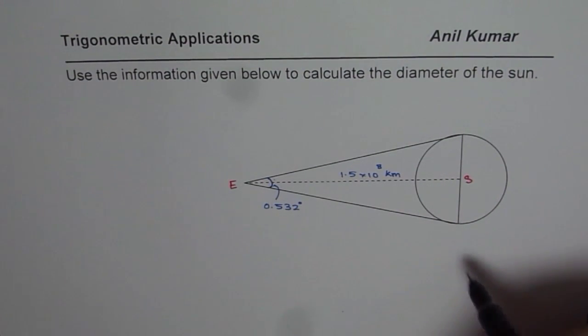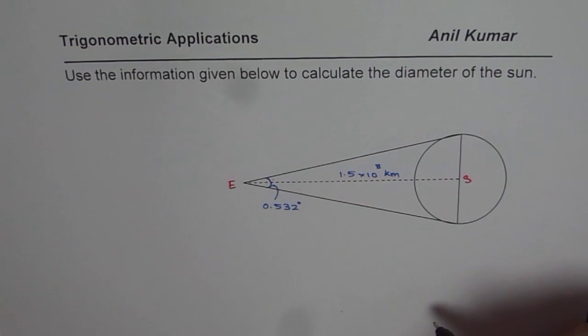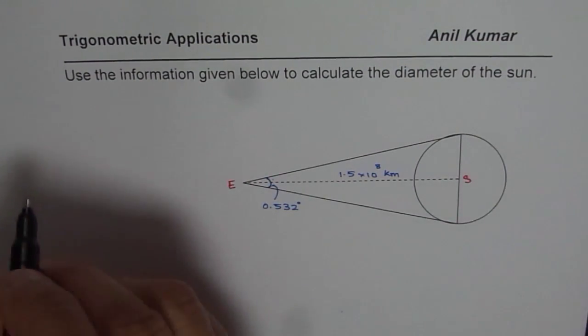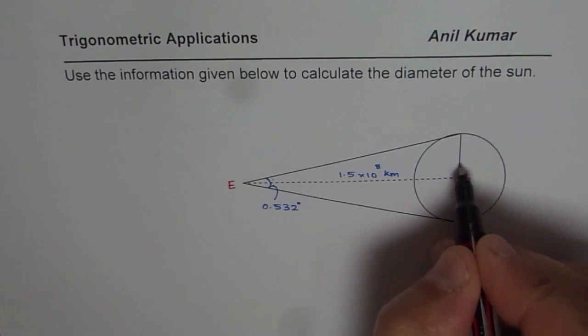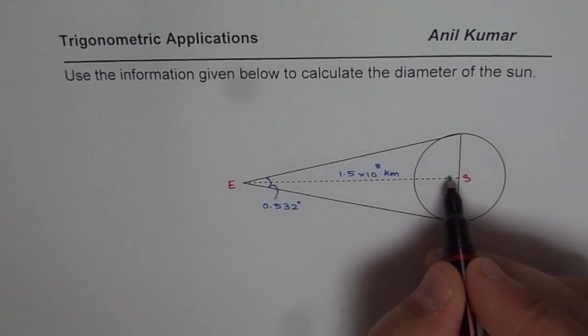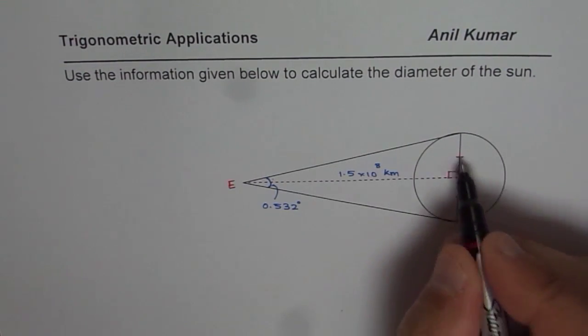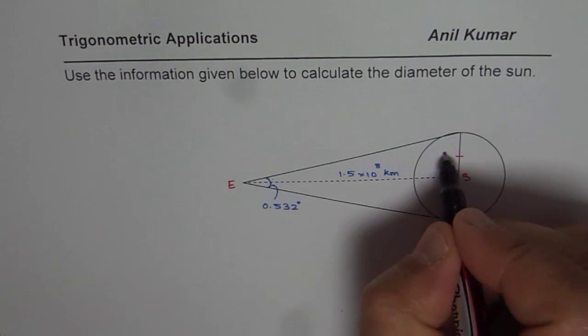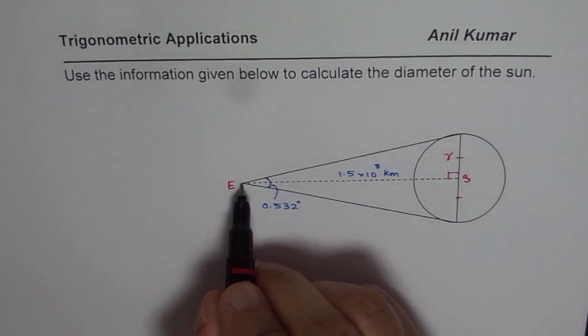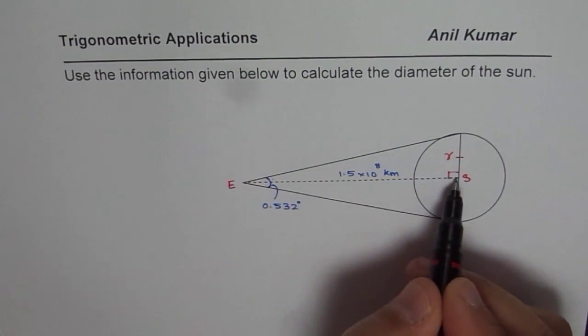So you can pause the video, find the answer and then look into my suggestions. Now, what we can do here is we can use the trigonometric ratio tan theta, knowing that this distance and the diameter will be perpendicular and of course, this becomes the radius of the sun. So let us find the radius using the distance from earth to sun.